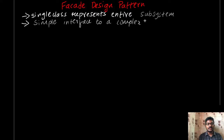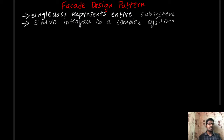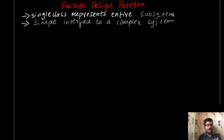For example, we can use real life examples. The main purpose of the Facade Design Pattern is that complex details are hidden behind the scenes. We can use a simple interface to interact with a complex system. Since we are implementing the Facade Design Pattern, this is simple.